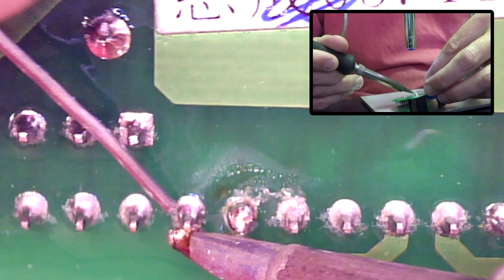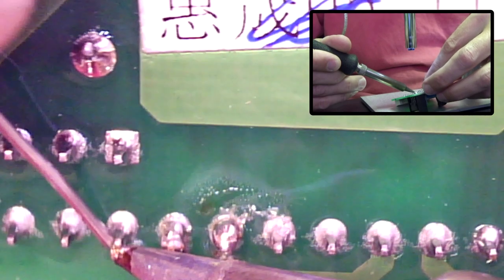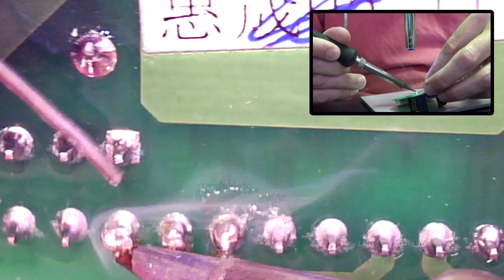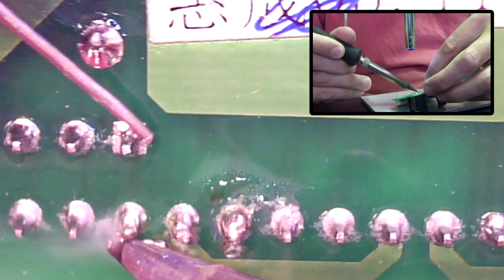But basically I'm just going to do what they call reflowing the solder joints. I'm reflowing the solder joints on the connector that makes the contact between the scale and the powder trickler. Once I reflow the joints, put it back together, and here we go.